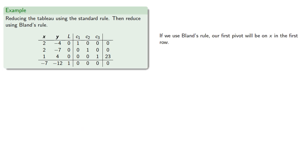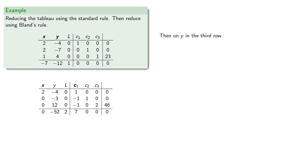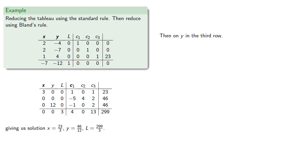Now if we use Bland's rule, our first pivot will be on x, that's the lowest indexed variable with a negative coefficient in the first row. Then y on the third row. And this gives us the solution, which is the same solution.